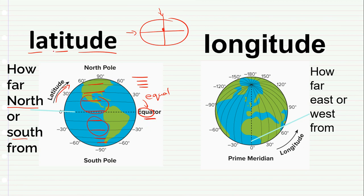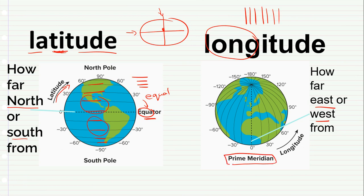When we see the word equator, we think of latitude. Longitude shows us the long lines — it's easier to remember because longitude has the word long in it. Longitude lines show us how far east or west something is from the prime meridian. So: longitude = long lines; latitude = the equal horizontal lines.